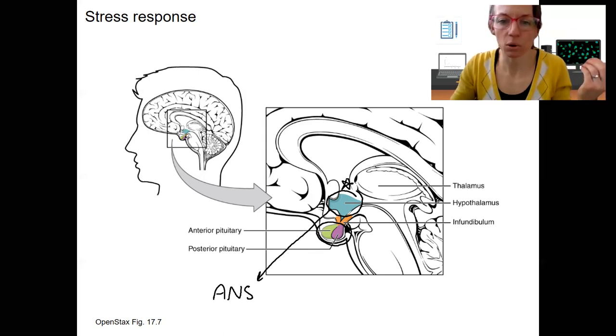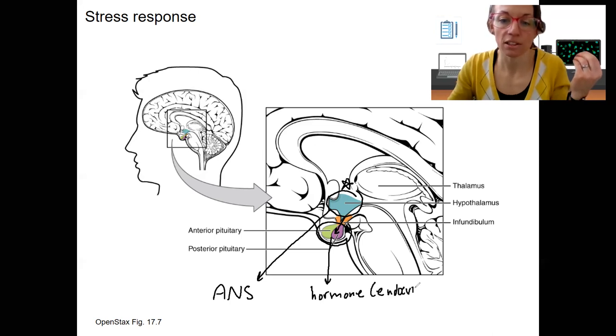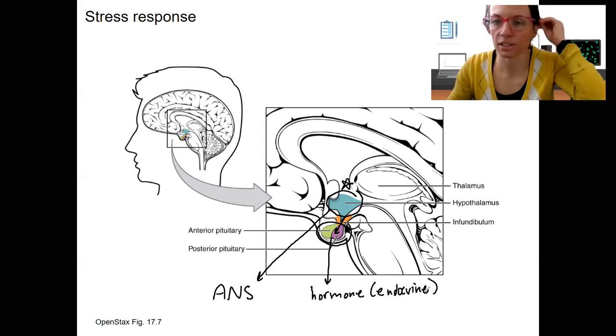The hypothalamus also is going to coordinate a neuroendocrine response via the pituitary. So the pituitary gland is then going to release hormones. This is going to be our endocrine response to stress, that is also important for long-term responses to stress.